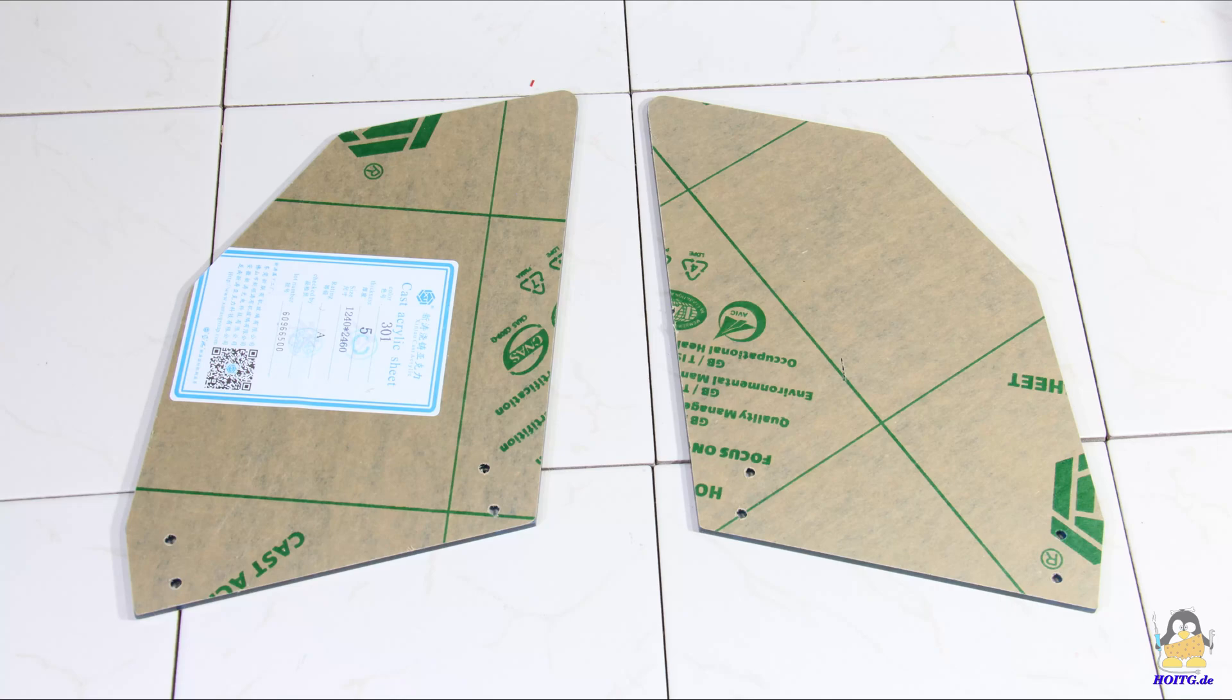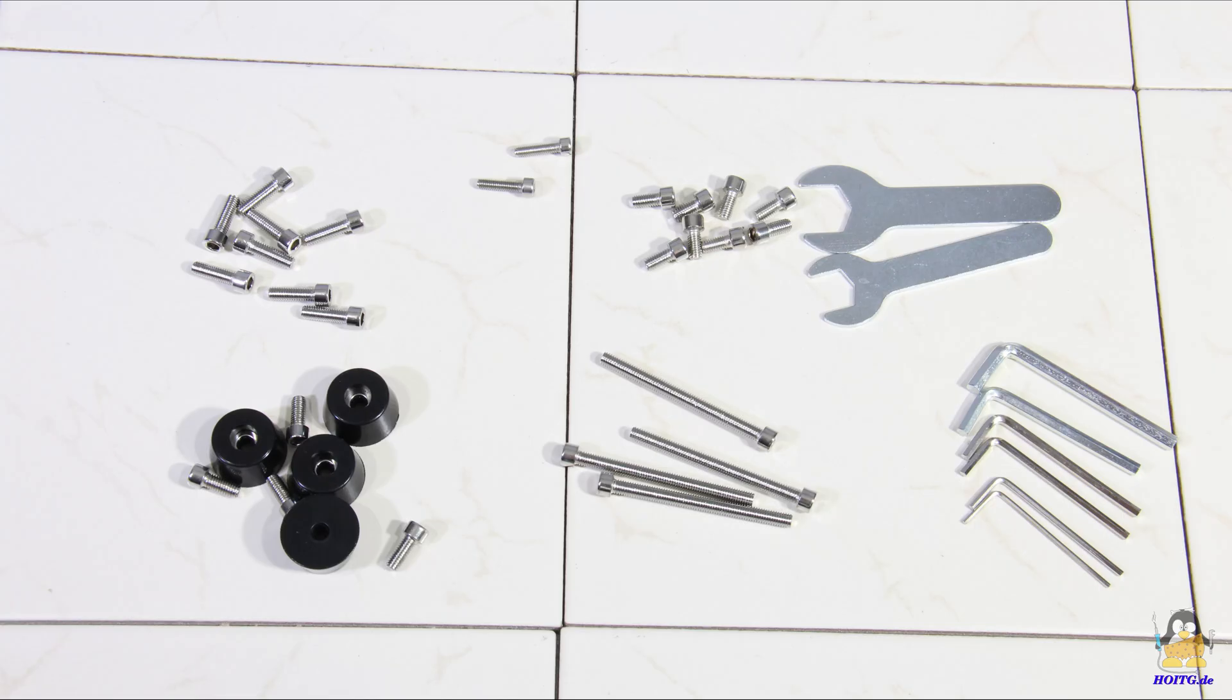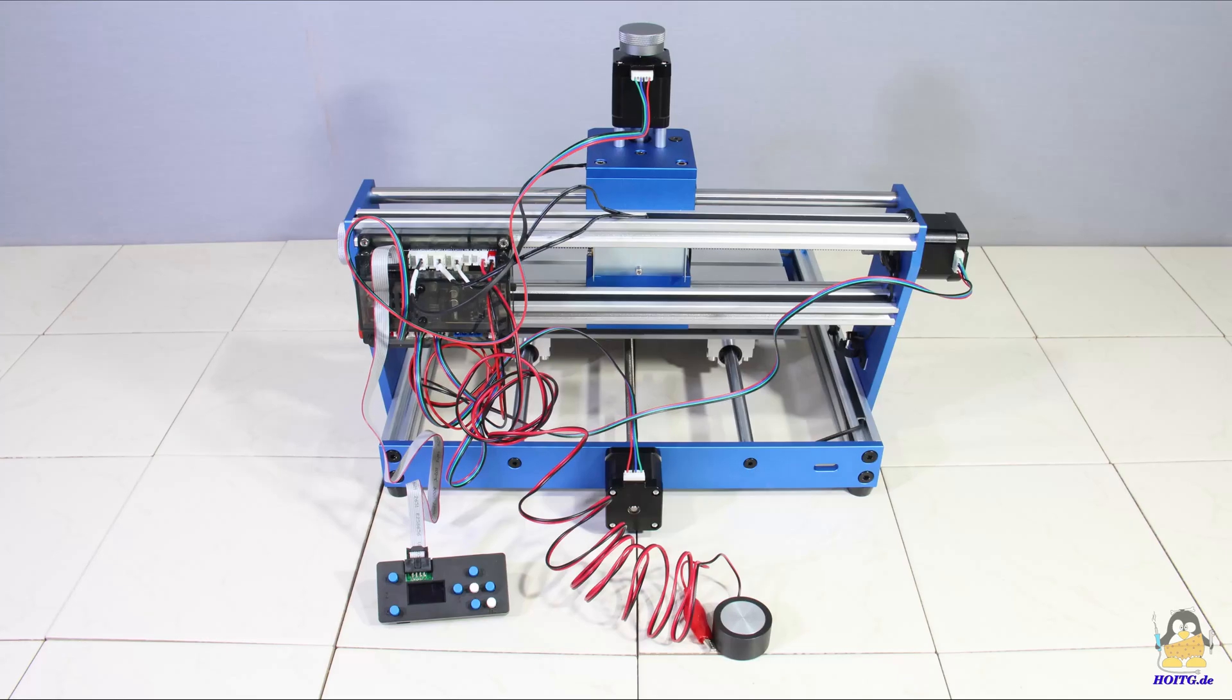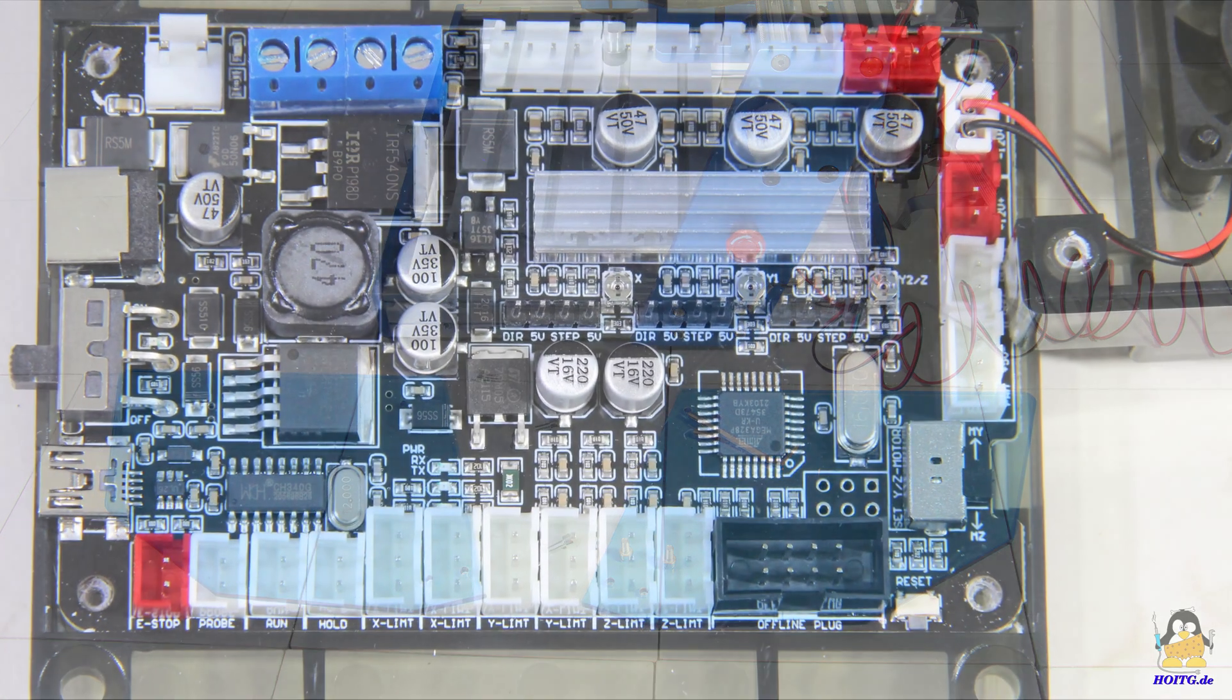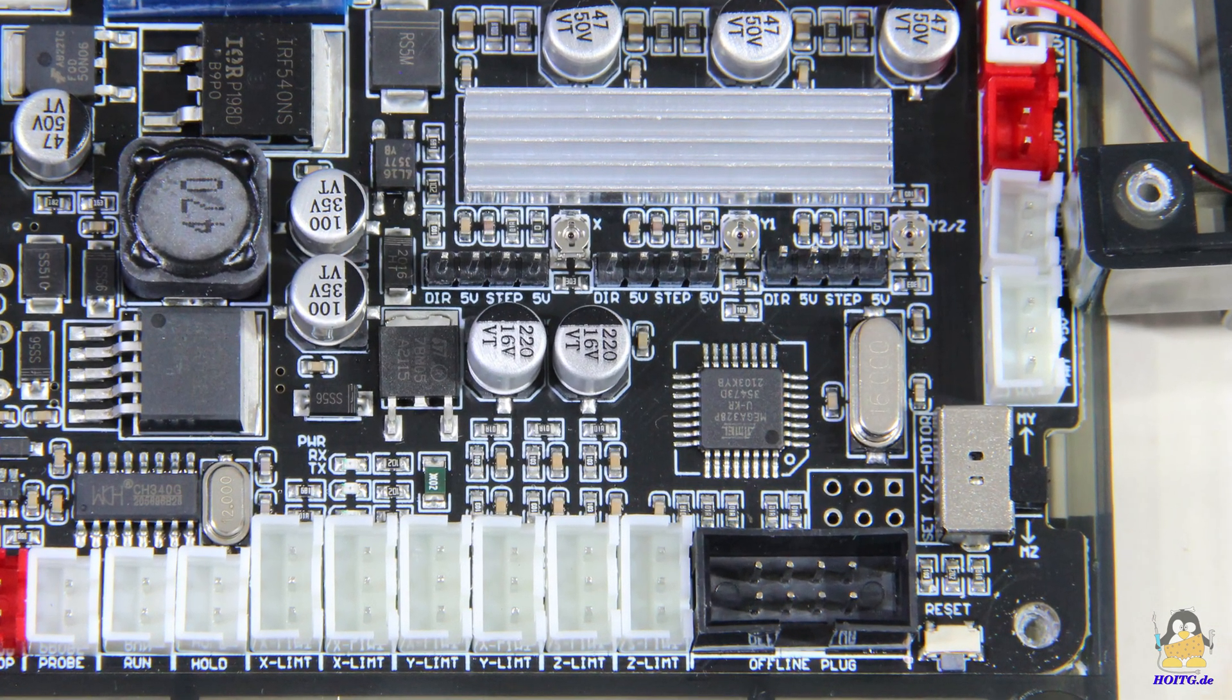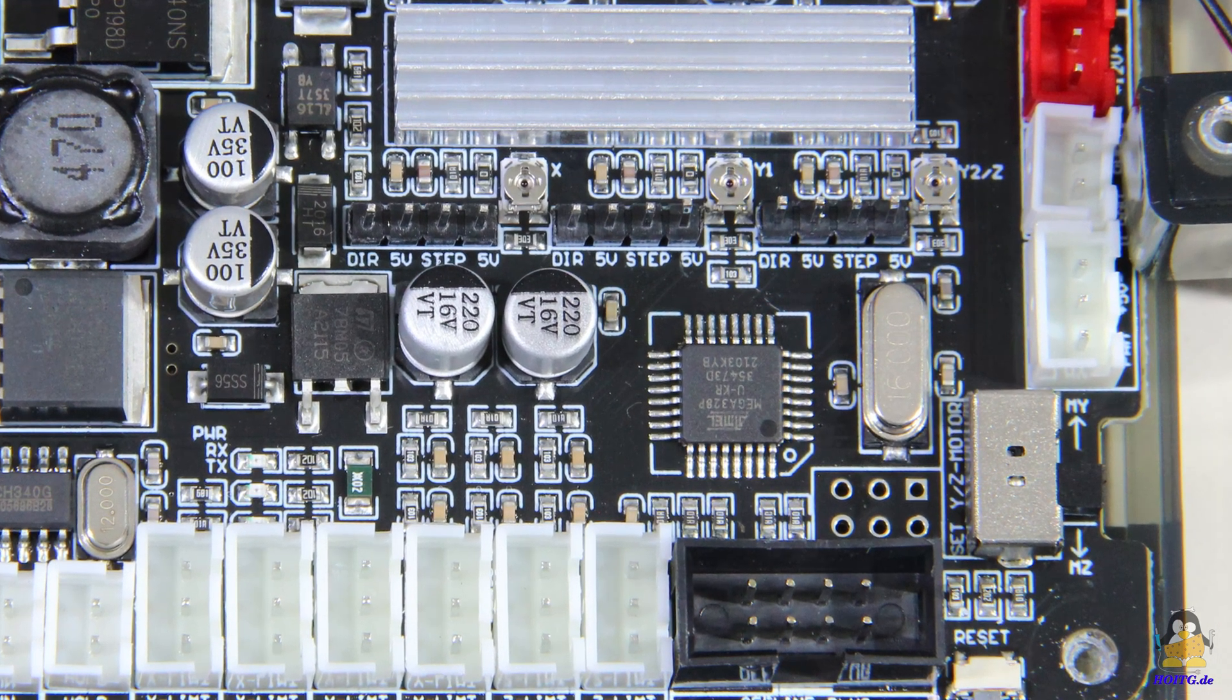All photos in high resolution of what is inside the package as well as from the assembly can be found on the website. The core element of the mainboard is a microcontroller type ATmega328P running the open source firmware Grbl.